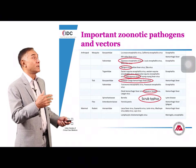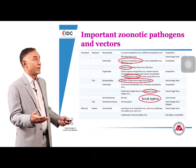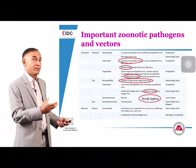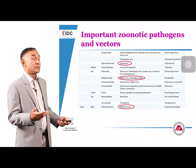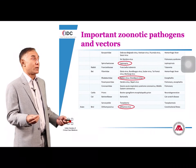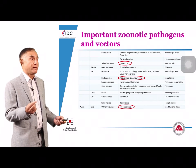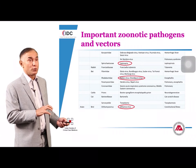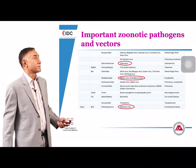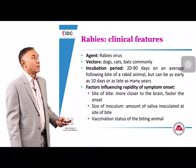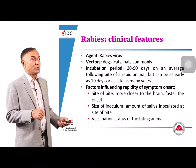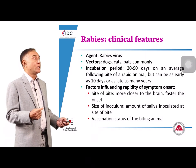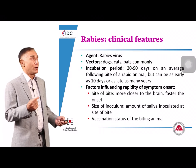Regarding rabies: dogs, cats, and bats can transmit rabies, though bat-associated rabies has never been reported in India. The incubation period can be very long — one to three months — so it is essential to ask about any history of animal bite or contact even when patients present with unexplained neurological symptoms. Factors influencing rapidity of onset include proximity to the brain (e.g., upper extremity or facial bite), the size of the inoculum, whether it was a bite versus a lick, and the vaccination status of the biting animal.